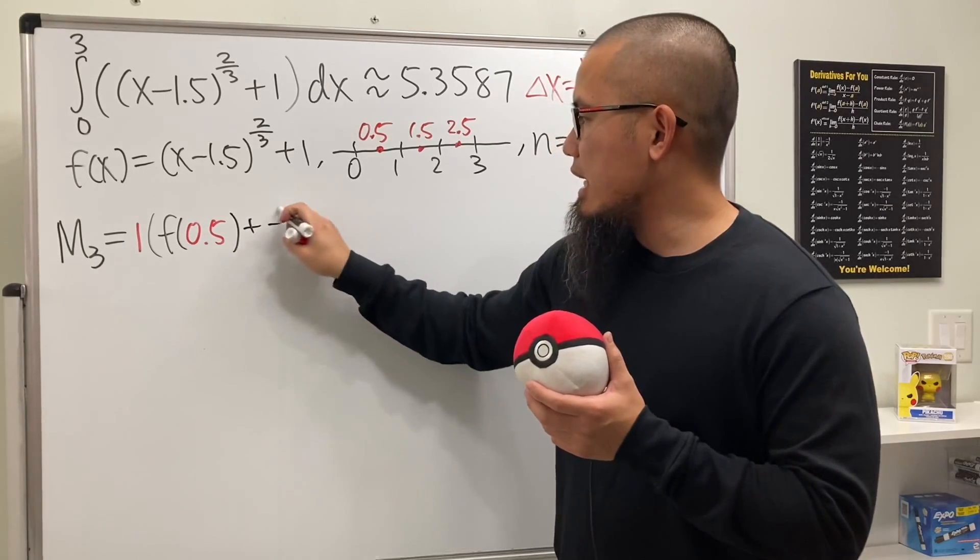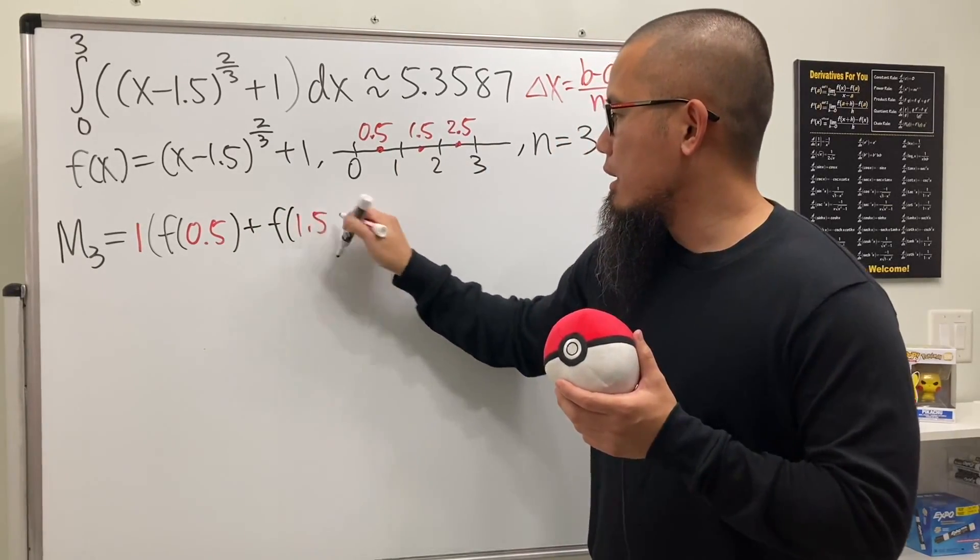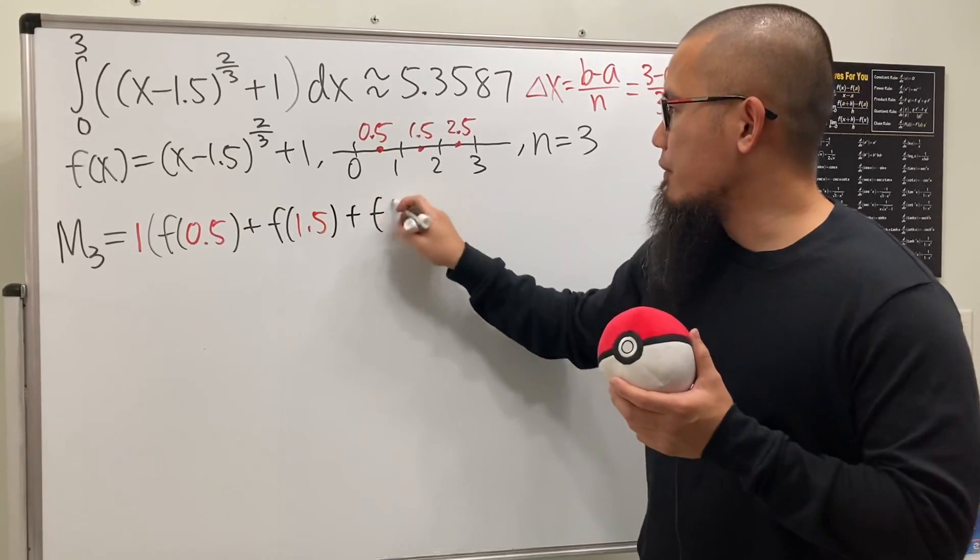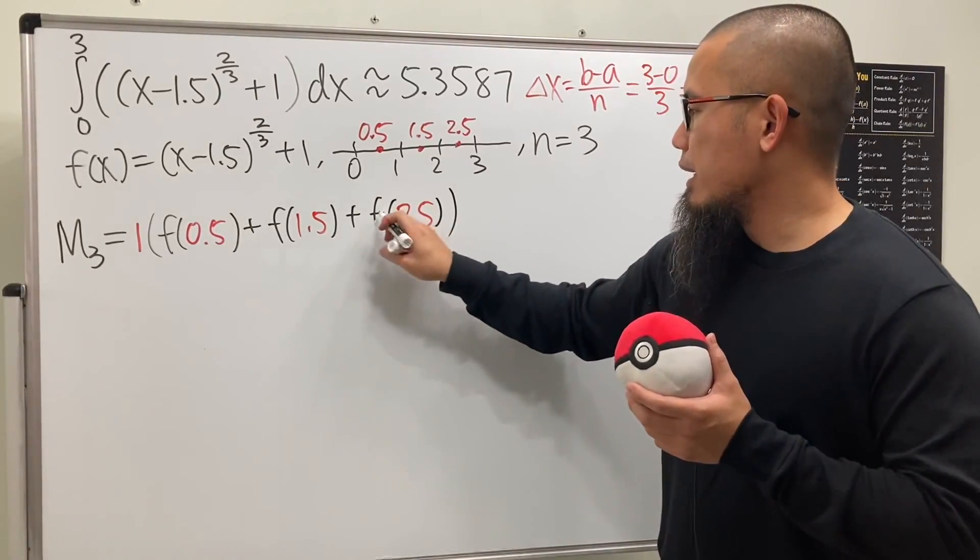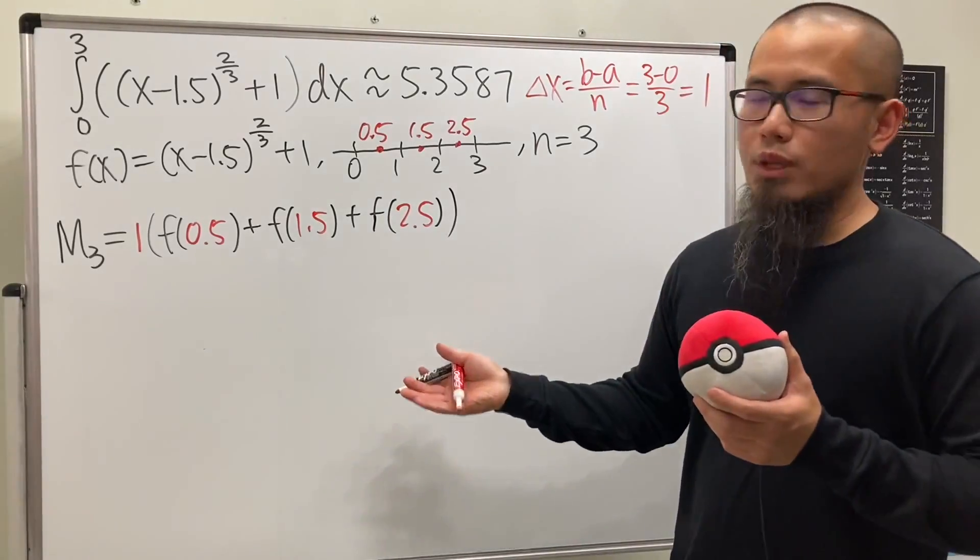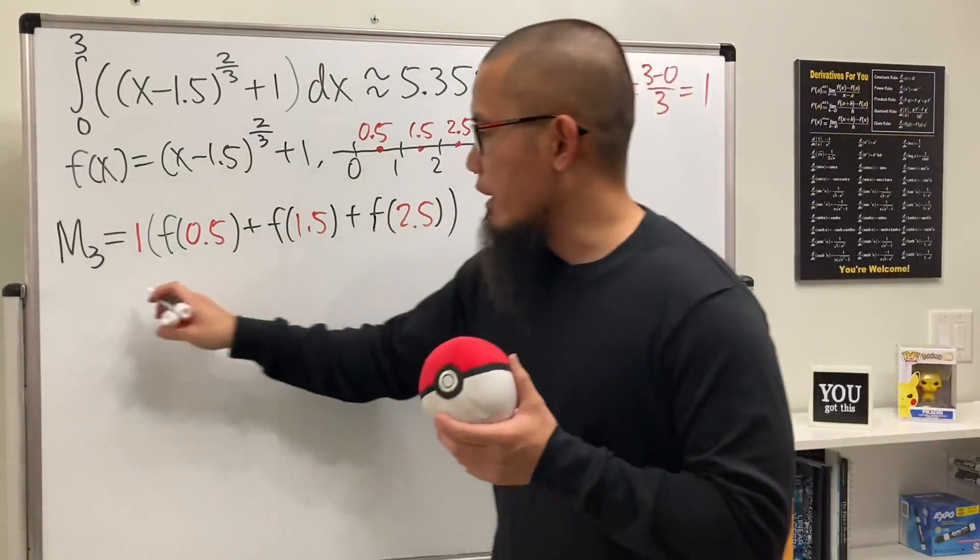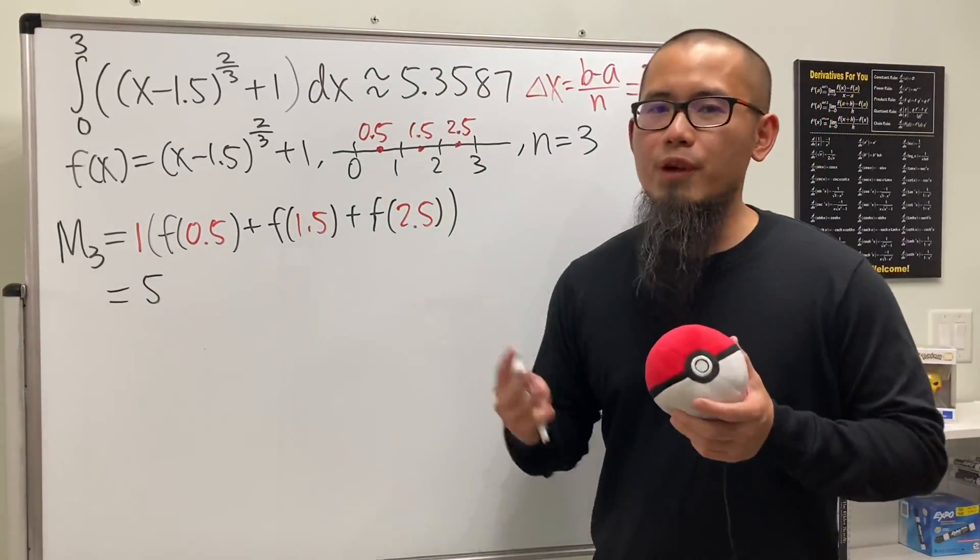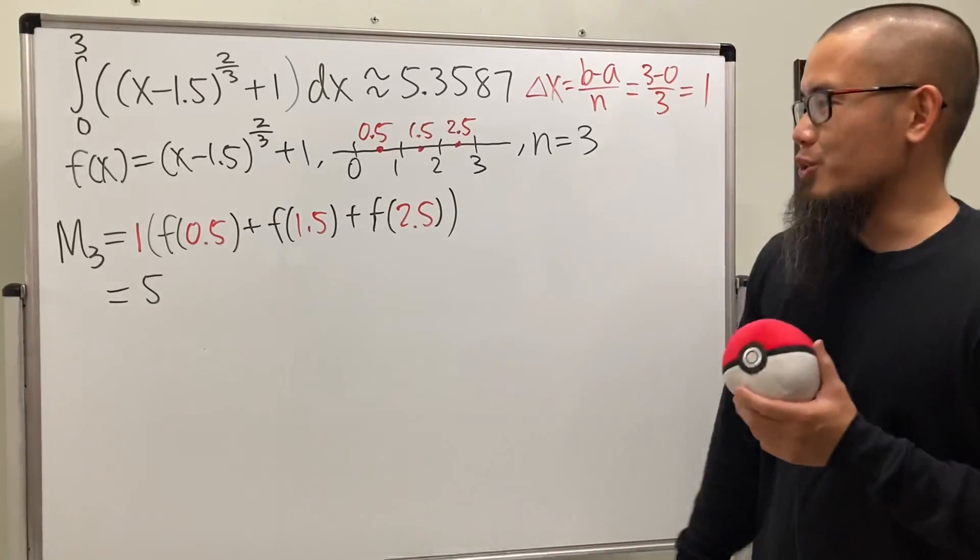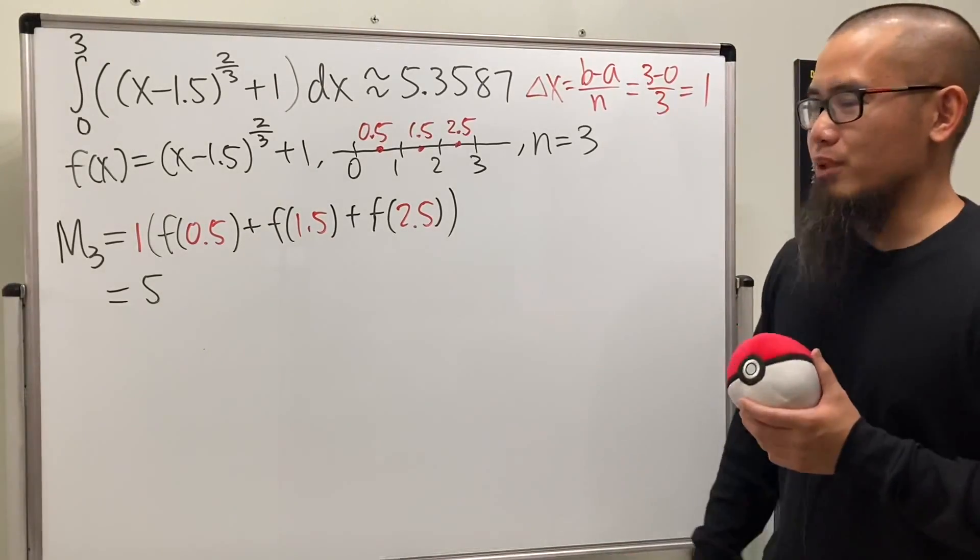I'm going to plug this into the function. The coefficient is just 1 for the midpoint rule, so we have f(0.5) plus f(1.5) plus f(2.5). If you use the calculator, we actually get exactly 5.